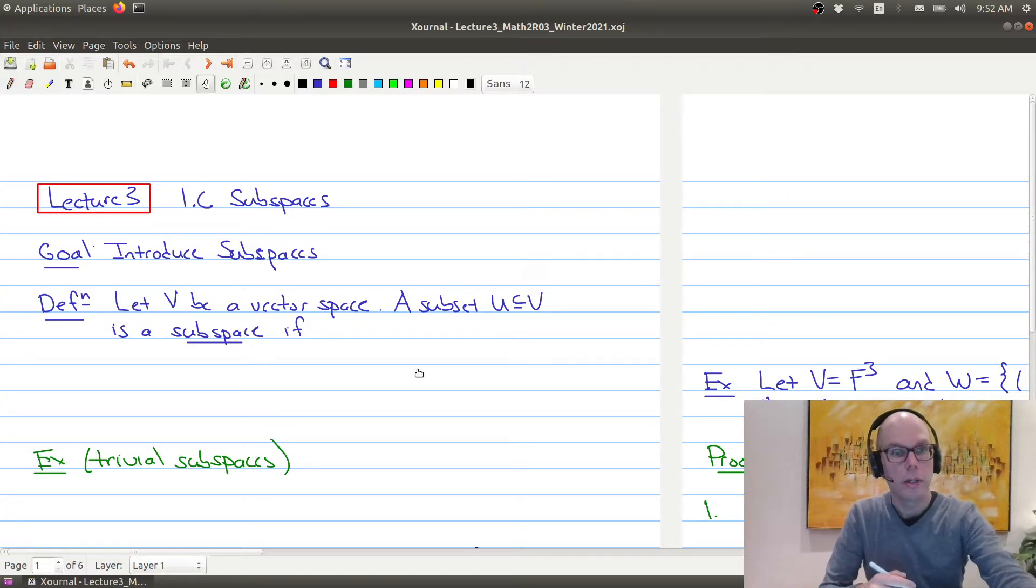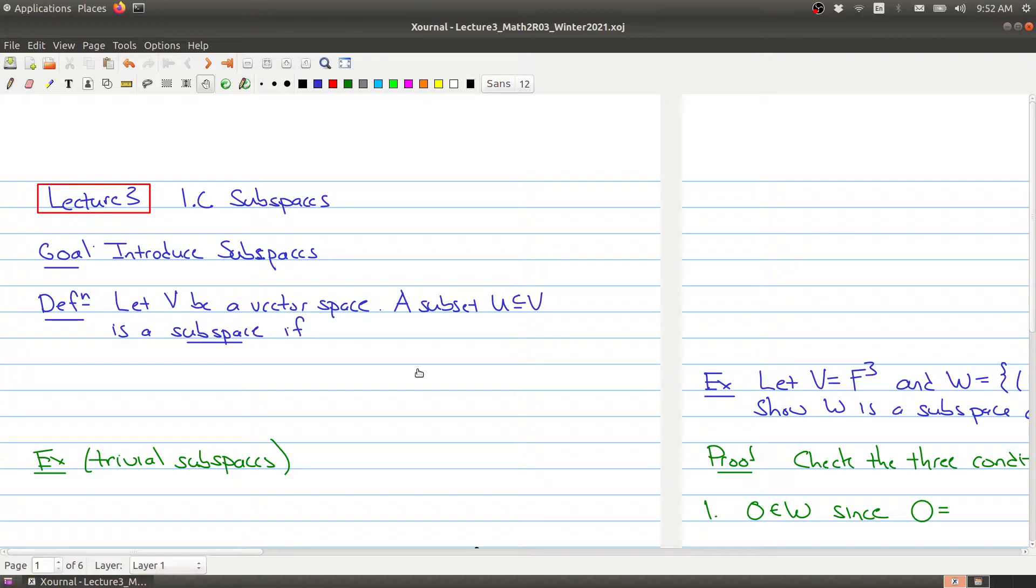So let's get started and we're going to jump in right away with the definition of what it means for something to be a subspace. We start with V being a vector space and a subset, a collection of objects inside of V, is a subspace of V if this U is also a vector space with the same scalar multiplication and addition of V. So in some sense it inherits the structure, the operations from the larger set V, but if we restrict ourself to the smaller set it still has all the properties of a vector space.